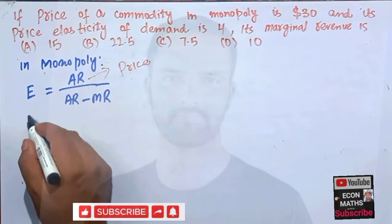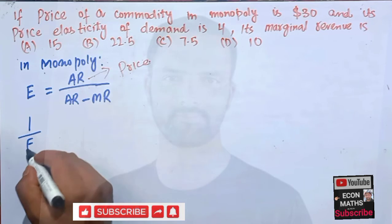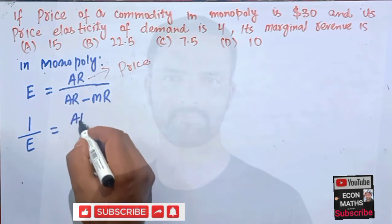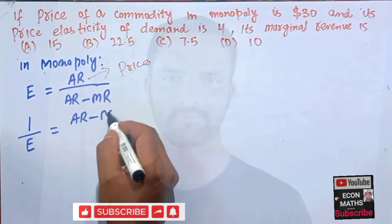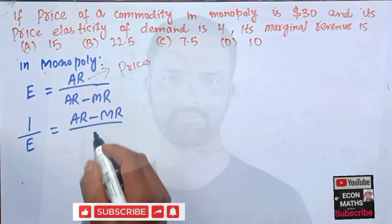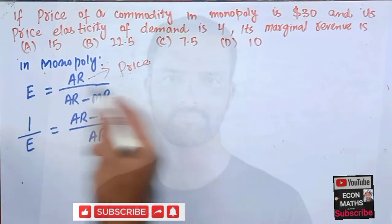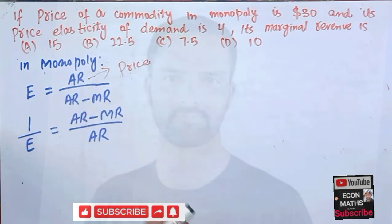You can write it in this way also. Now just plug the values, so we can write it like this: price minus marginal revenue divided by price, because average revenue means price.